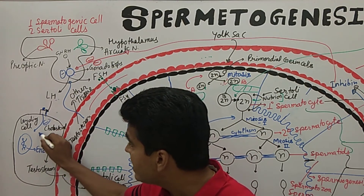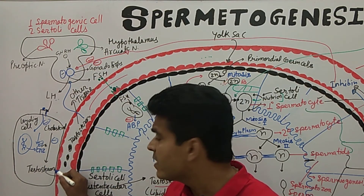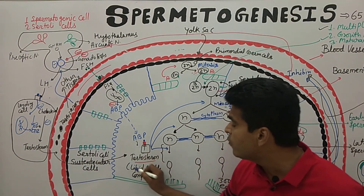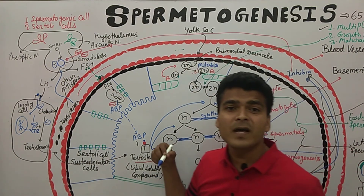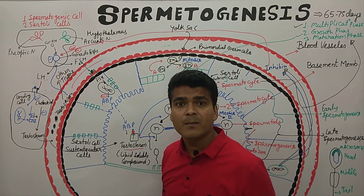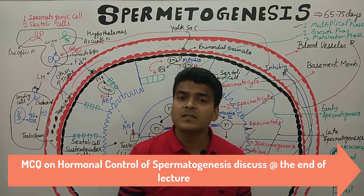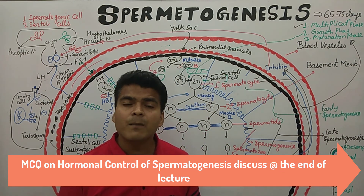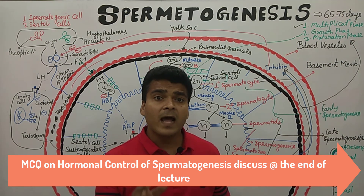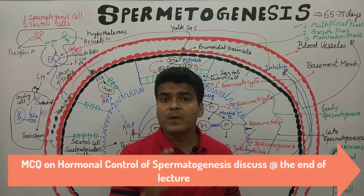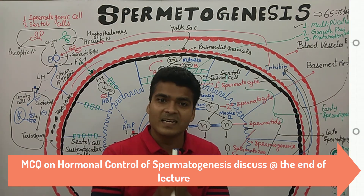As a result of the negative feedback, the enzyme responsible for converting cholesterol to testosterone is no longer stimulated, so testosterone production decreases and the blood testosterone level comes back down to normal. This negative feedback system regulates the overall hormonal control of spermatogenesis. I hope you are able to understand the control of hormones over the production of sperm and spermatogenesis.